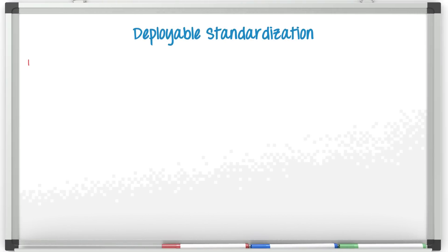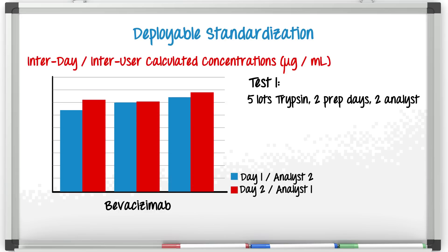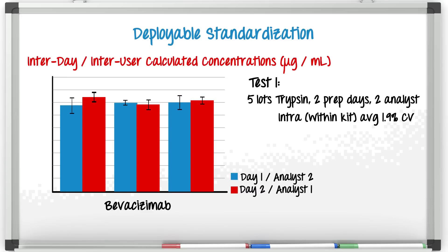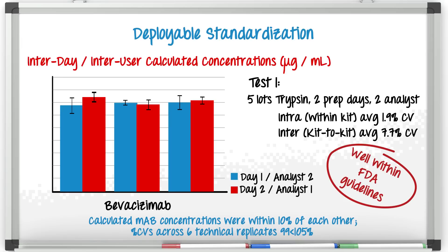The first thing that we did was look at the variability that the kit provides. We ran five production lots with five different lots of trypsin on two different days with two different analysts, and we still have great statistical performance for the monoclonal antibody bevacizumab. The intra-kit, or within each kit, percent CVs across all the peptides were less than two percent, while the inter-kit between kits performance was less than only eight percent. The data presented highlights that across two days and two different analysts with six technical replicates, the calculated concentrations of the tryptic peptides were within 10 percent of each other, and the mean accuracies were between 99 and 105 percent. This is well within the recommended FDA guidelines, and this speaks to the level of robustness and reproducibility that you can expect to achieve as well as transferability from lab to lab.